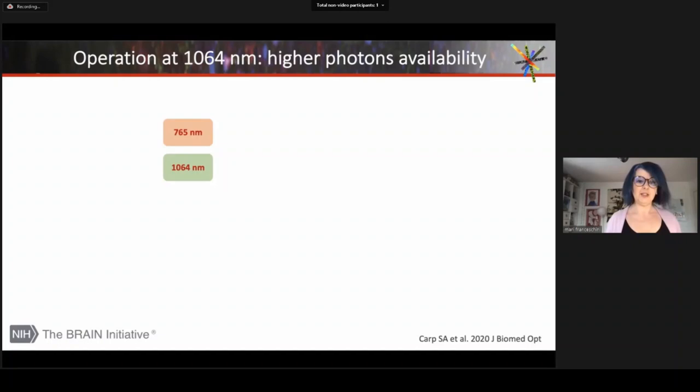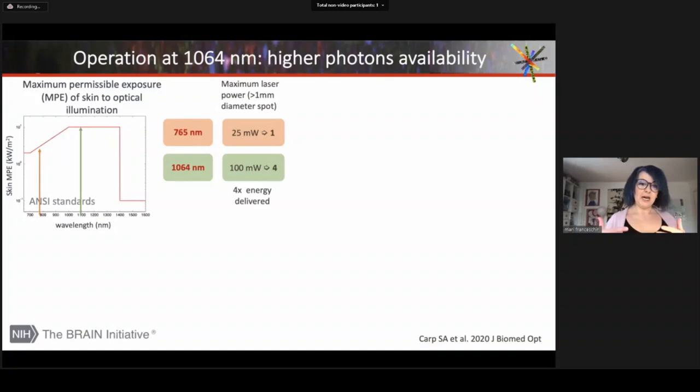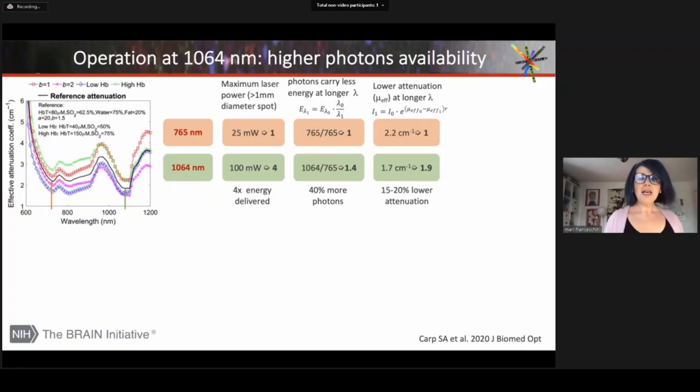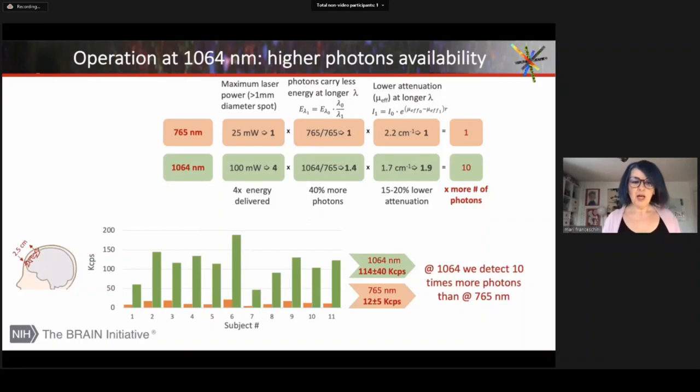The most important advantage is the higher photon availability, which is given by many factors. The first one is that we can send more light per regulatory standard. At longer wavelength we have more photons per energy, and there is lower effective attenuation at this wavelength versus the near infrared wavelengths. So multiplying all these factors, we get a factor of seven improvement on photon detection, as shown in eleven human subjects using appropriate detectors.